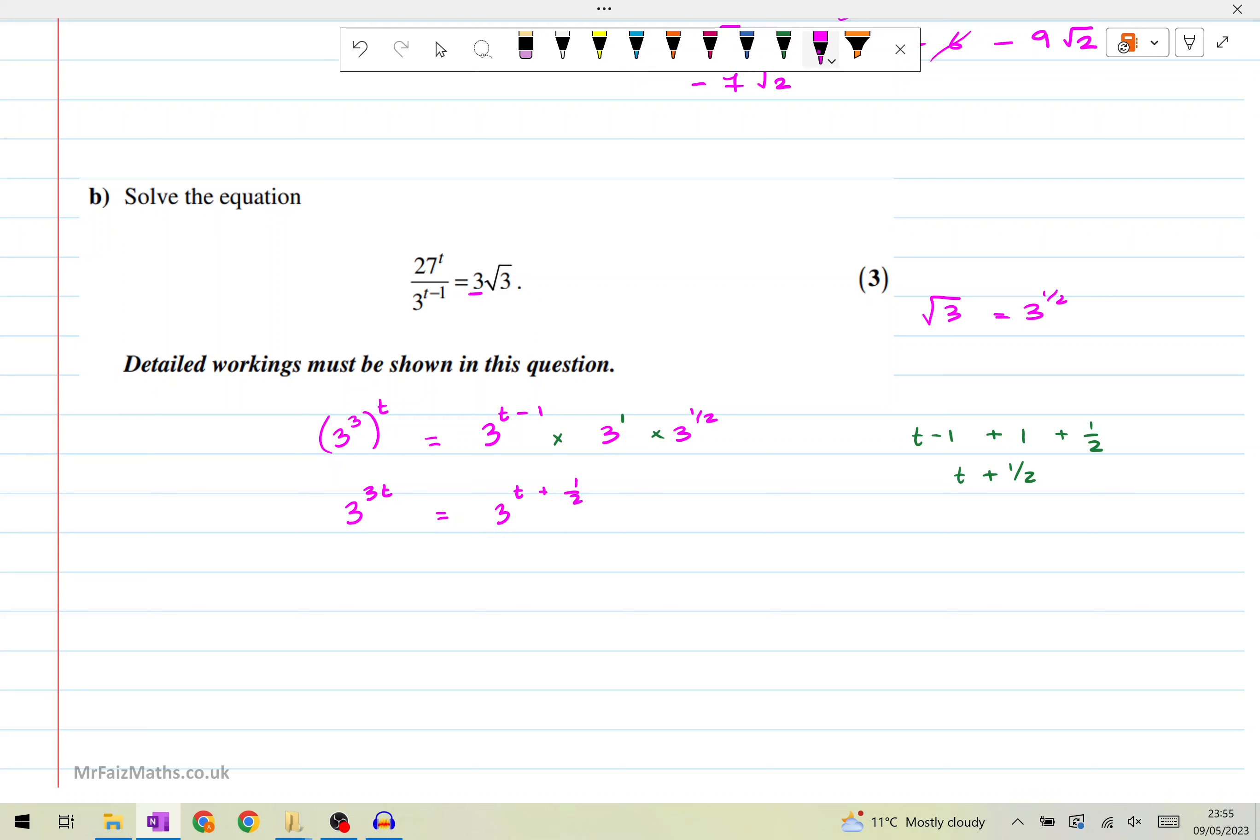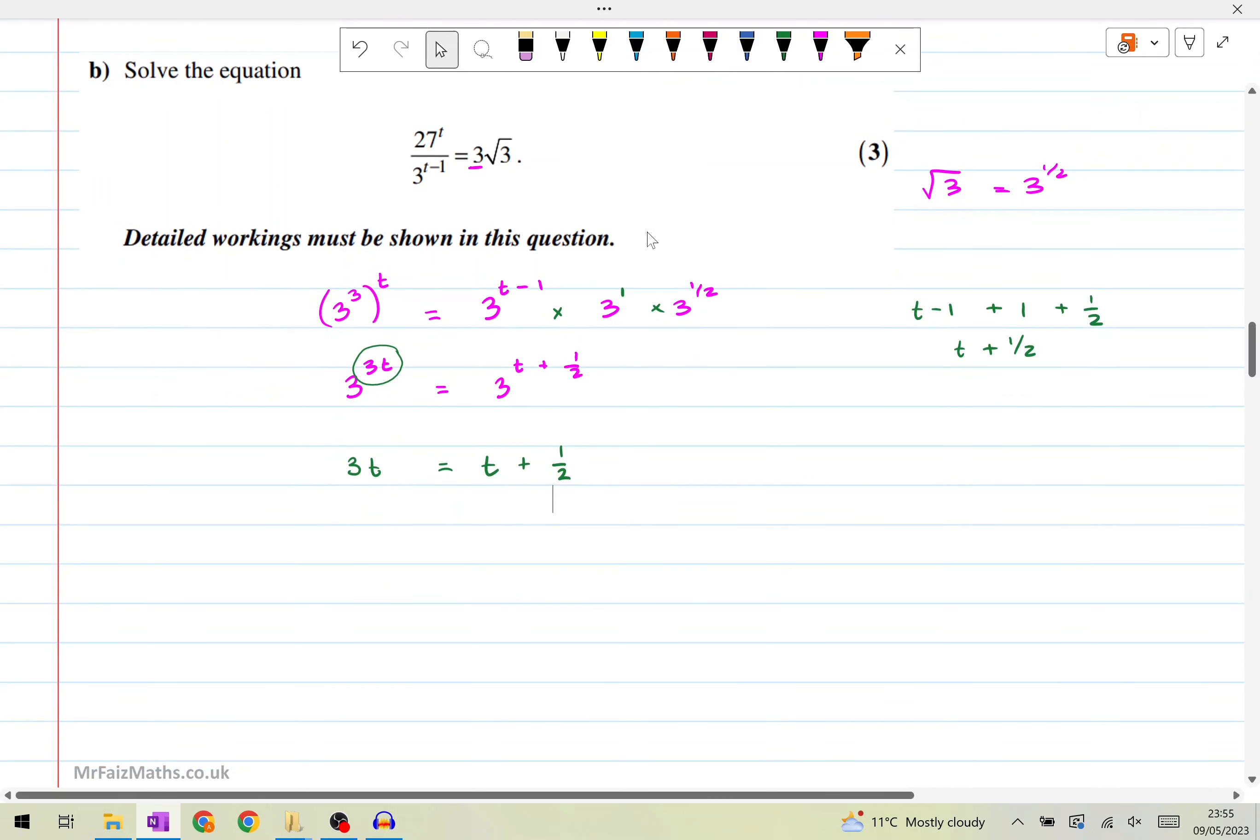So at this point, you can just make the two powers equal to each other because the bases are the same. So now we could say that three t on this side is equal to t plus half on this side. So solving this, just subtract t from both sides. So we get two t is equal to a half. And dividing by two, that gives us t is equal to one over four.